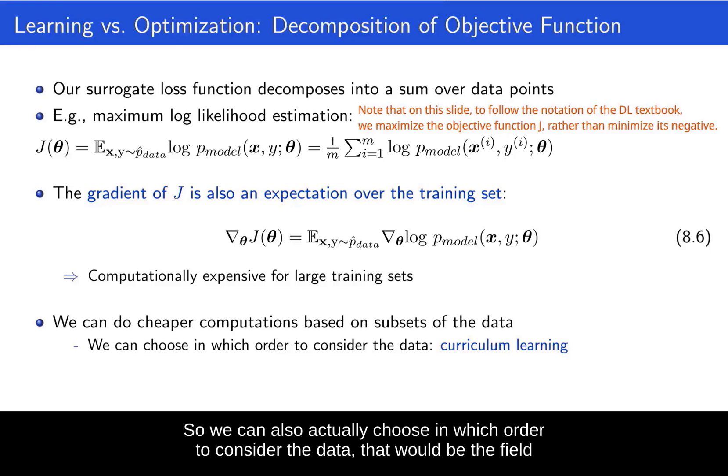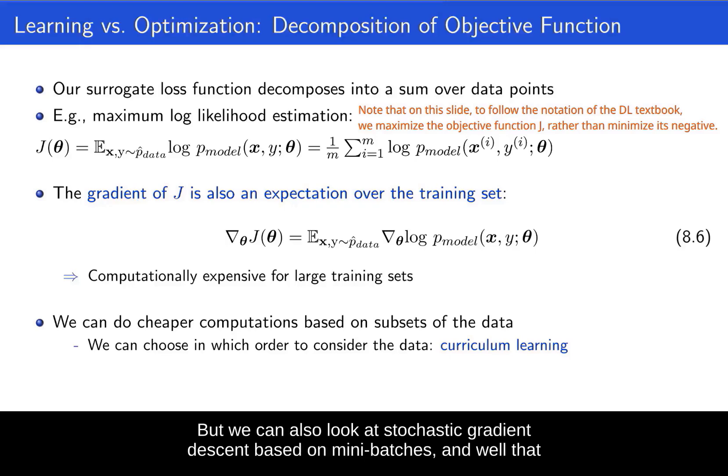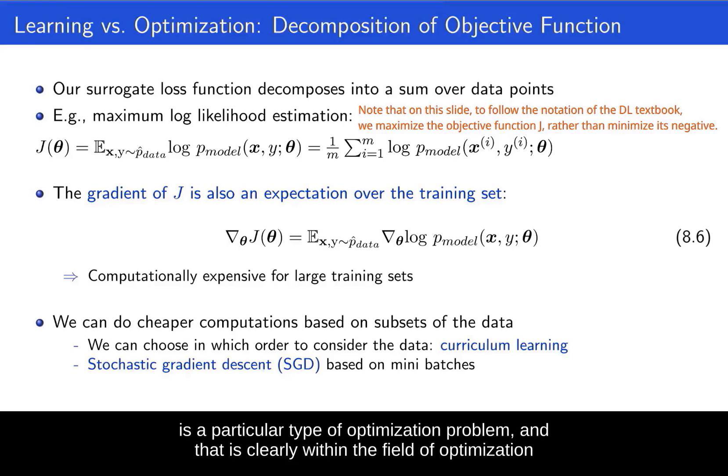So we can also actually choose in which order to consider the data. That would be the field of curriculum learning, and that is really not covered in standard optimization. That is clearly some part of learning that is not optimization so much. But we can also look at stochastic gradient descent based on mini-batches, and while that is a particular type of optimization problem, it is clearly within the field of optimization and heavily studied there.